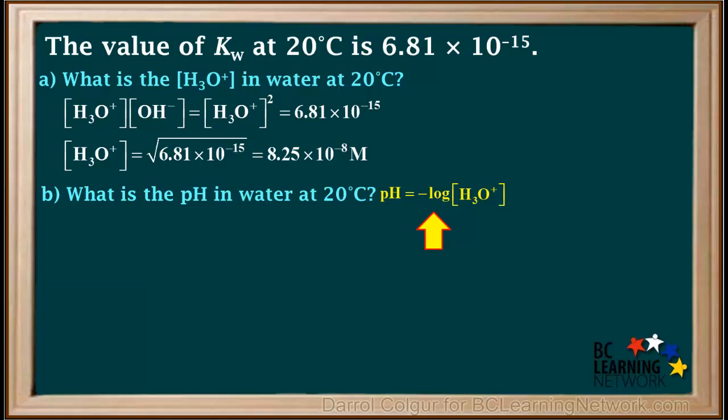pH is the negative log of the hydronium ion concentration, which is the negative log of 8.25 times 10 to the negative 8th, which comes out to 7.084.